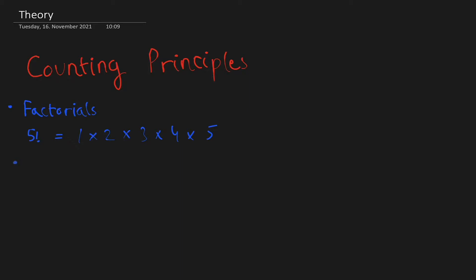The second thing you need to know is what permutations and combinations are. Permutations are basically just the amount of ways in which a certain number of elements can be selected from a bigger set of elements. For example, the number 5P3 is the amount of ways a set of 3 elements can be selected from a bigger set of 5 elements.